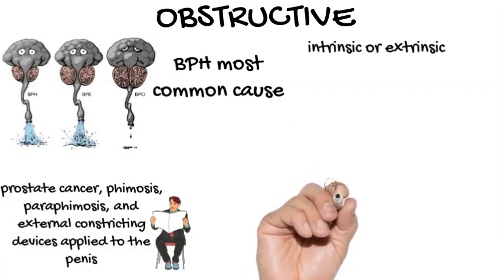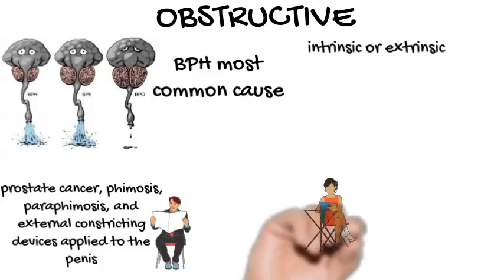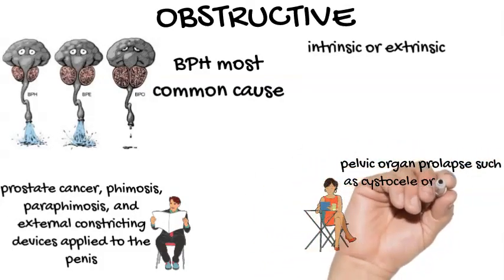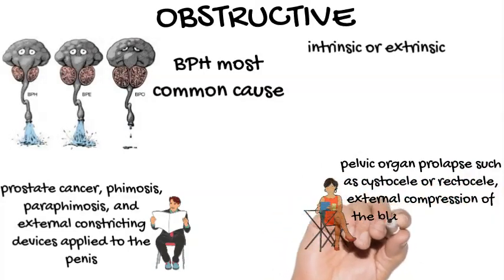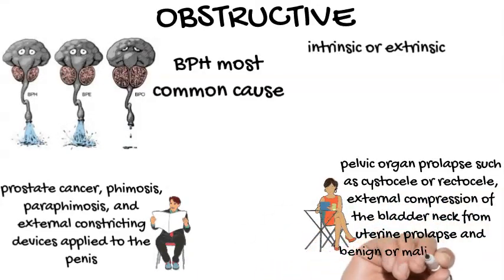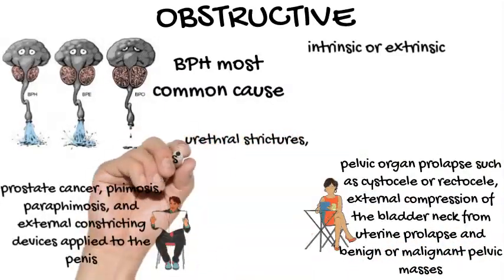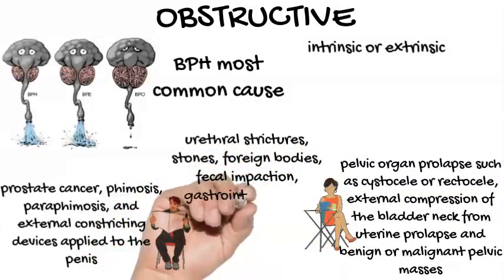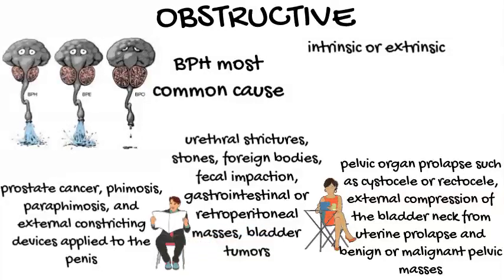Obstructive causes in women often involve pelvic organ prolapse such as cystocele or rectocele. Urinary retention can also result from external compression of the bladder neck from uterine prolapse and benign or malignant pelvic masses. In men and women, urethral strictures, stones, and foreign bodies can directly block the flow of urine. Fecal impaction and gastrointestinal or retroperitoneal masses large enough to cause extrinsic bladder neck compression can result in urinary retention. Urinary retention from bladder tumors is usually caused by blood clots from intravesicular bleeding.